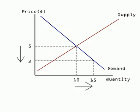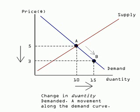Now suppose the price declines to $3. As price declines, the quantity demanded increases to 15 units. This is reflected by the movement from point A to point B along the demand curve.